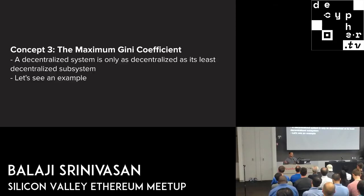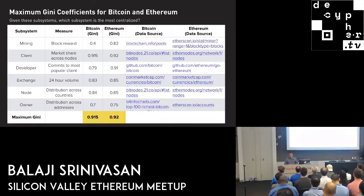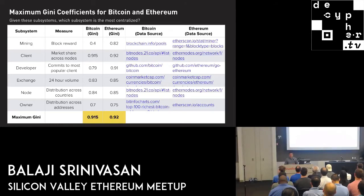The key idea is that we could take a maximum over these and say: a decentralized system is only as decentralized as its least decentralized subsystem. There's a decentralization bottleneck — if everything else is decentralized but you have one centralized component, the system is centralized because you can grab that bottleneck. In this table, it doesn't matter that Bitcoin was highly decentralized in terms of block rewards if you can compromise a particular client — the number one client is the most centralized component, and the other metrics wouldn't matter as much.